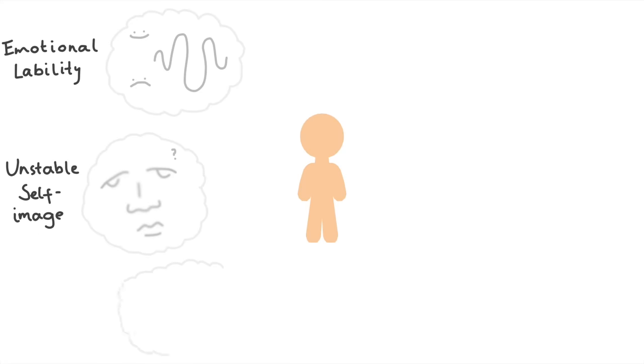Third, having intense and unstable relationships repeatedly, which can involve idealizing people, then intensely disliking or devaluing them in relatively short intervals.